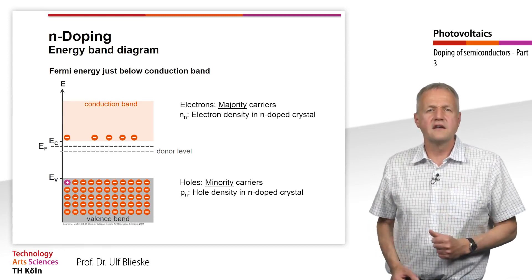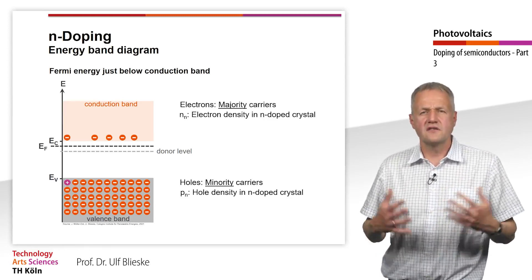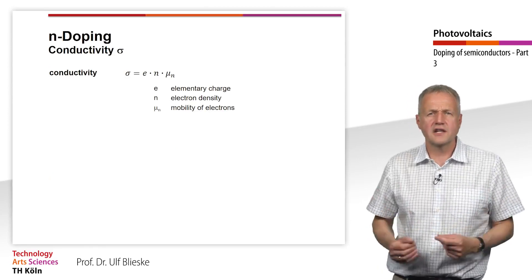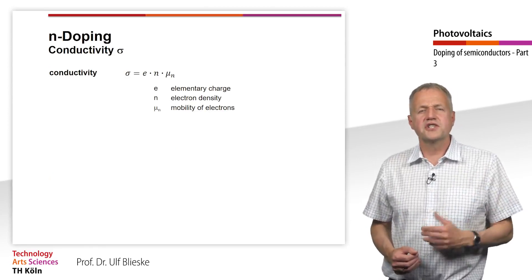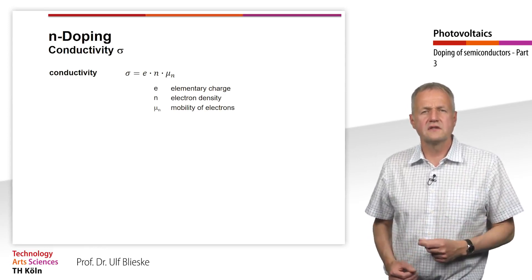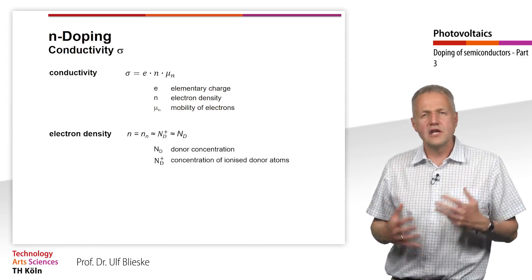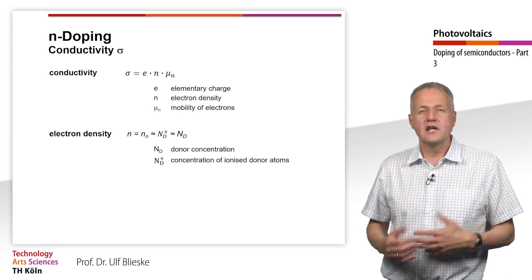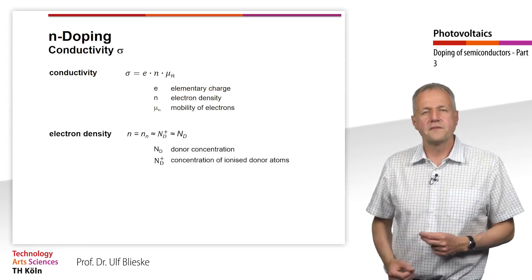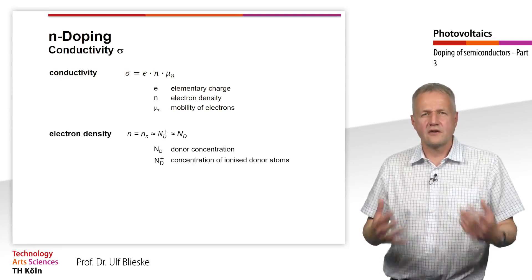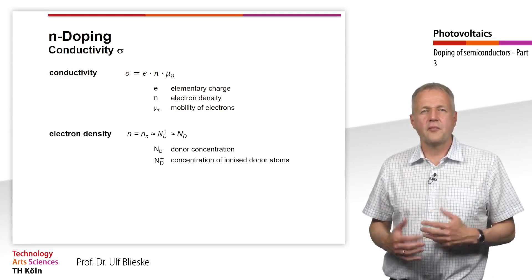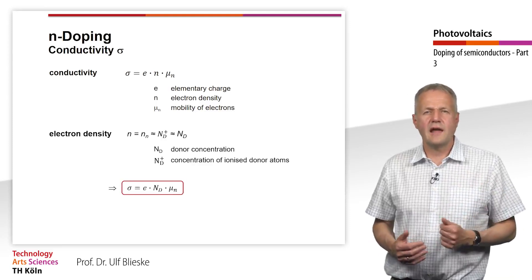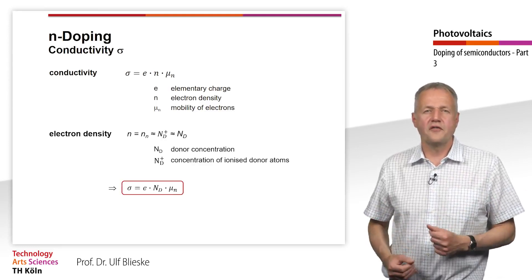Accordingly, Pn is the hole concentration in the n-doped region. To calculate the conductivity of the semiconductor, we need the electron concentration Nn in the n-doped region. This is approximately equal to the concentration of ionized donor atoms, and this in turn is approximately equal to the concentration of donor atoms. This semiconductor is n-conducting; thus, its conductivity is approximately proportional to the donor density. E is the elementary charge and μn the mobility of the electrons.